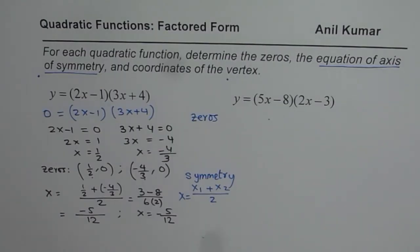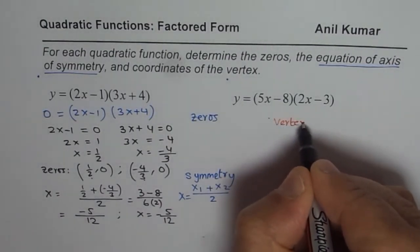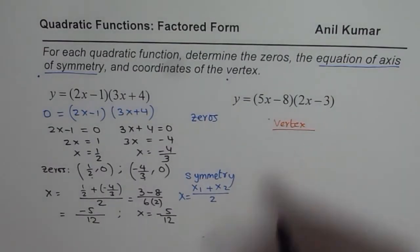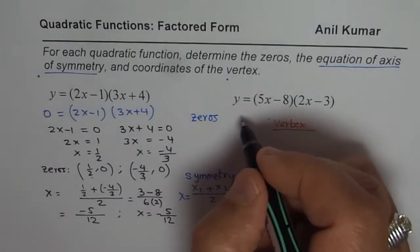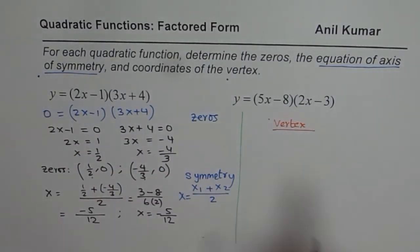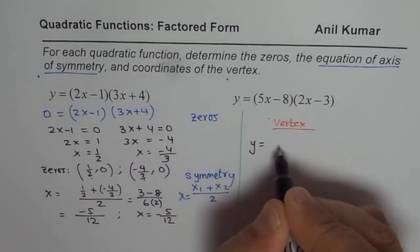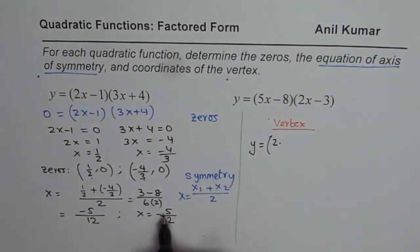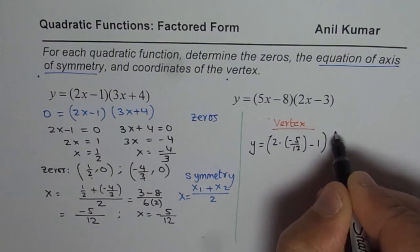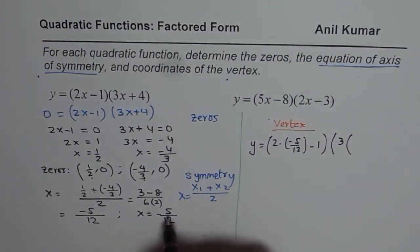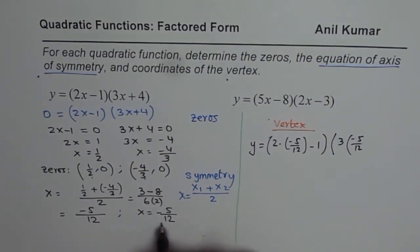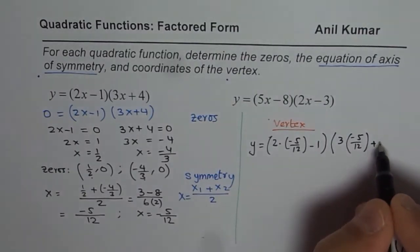Now the question is how to find the vertex. The vertex is a point which lies on the axis of symmetry. To find the vertex, we substitute the value of x equal to minus 5 over 12 into the given equation and find the value of y. So y equals to 2 times minus 5 over 12, minus 1, times 3 times minus 5 over 12, plus 4.